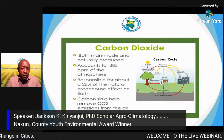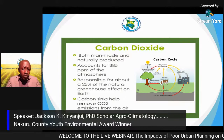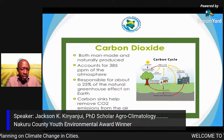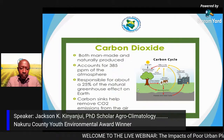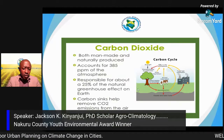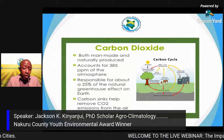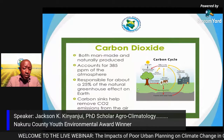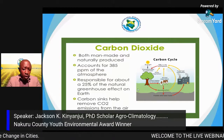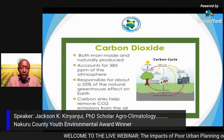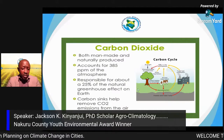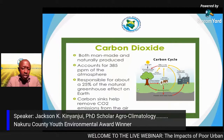Carbon dioxide accounts for 385 parts per million of the atmosphere. It is the largest greenhouse gas by quantity but not the most potent, responsible for about 25 percent of the natural greenhouse effect. Carbon sinks help remove CO₂ emissions — that's why we advocate for planting trees and good agricultural practices. We should also reduce paving over soil, since soil acts as a carbon sink. This is why we need to embrace a circular economy.